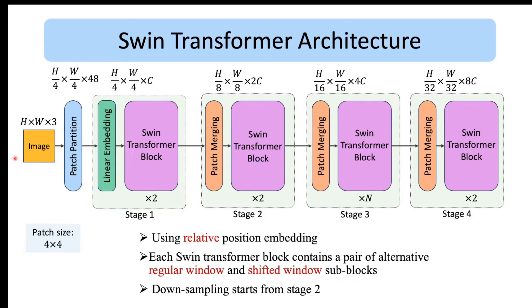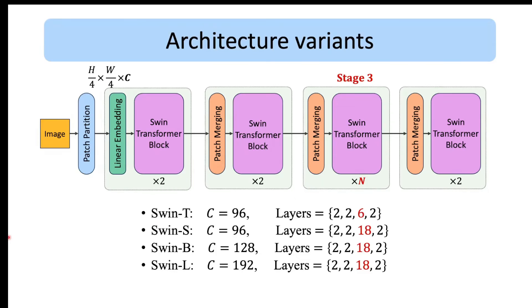Furthermore note that the Swin Transformer uses relative position embedding. We have previously dedicated a full video on relative position embedding, so please feel free to watch that video with the link in the description. The authors have designed four models with different sizes: Swin-T for tiny, Swin-S for small, Swin-B for base, and finally Swin-L for large. The difference between these architectures is the number of channels C in the first layer and the number of Swin Transformer blocks in stage 3. Note that the number of Swin Transformer blocks in stages 1, 2, and 4 are always the same among different models.